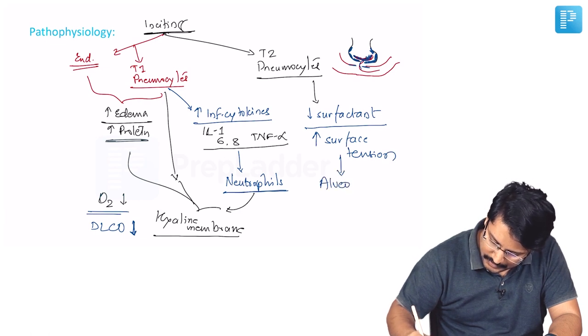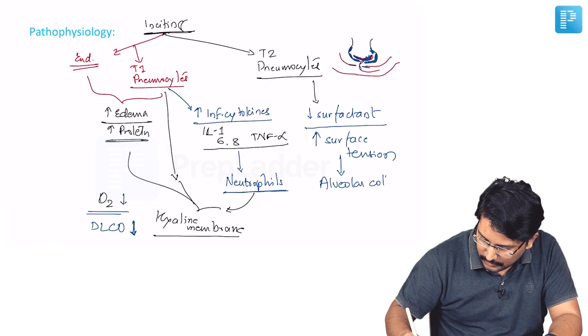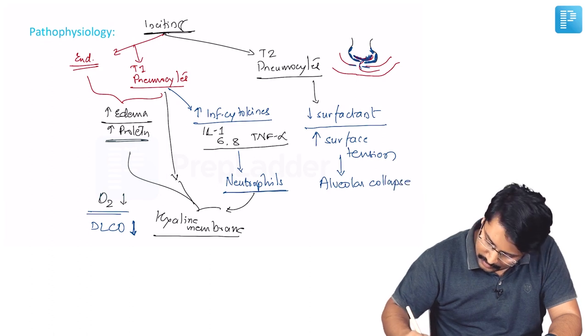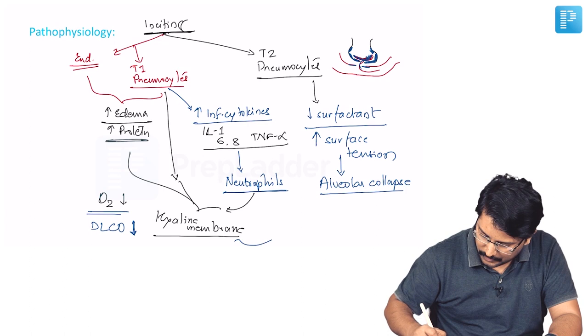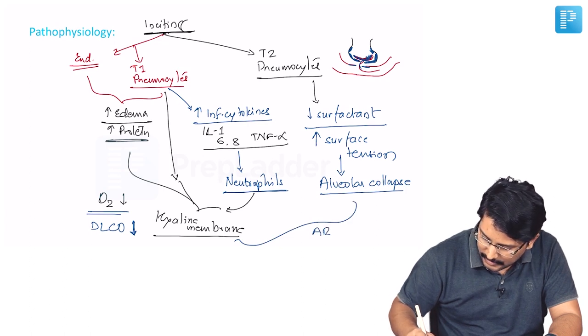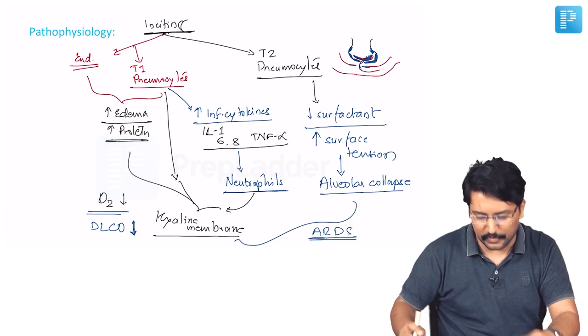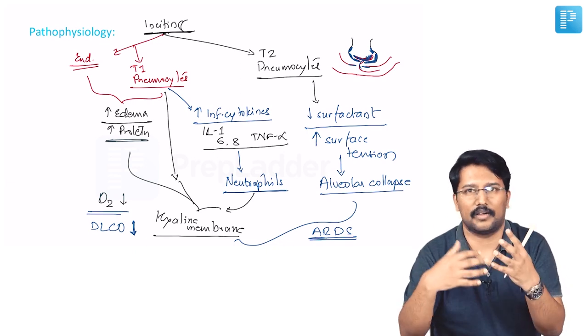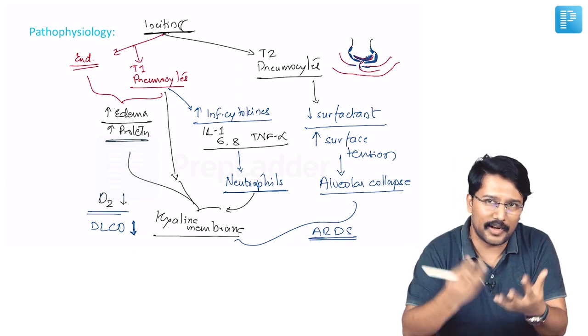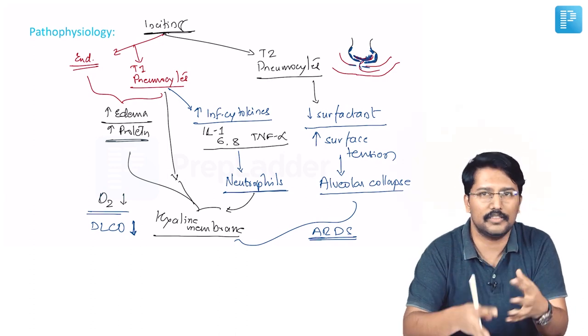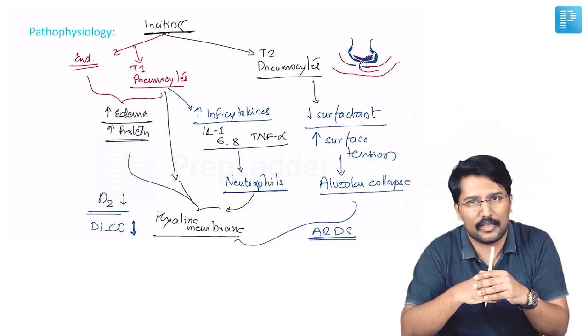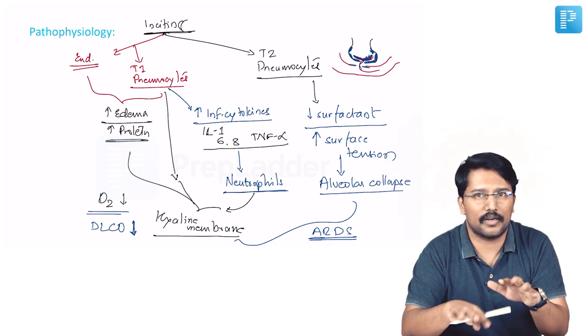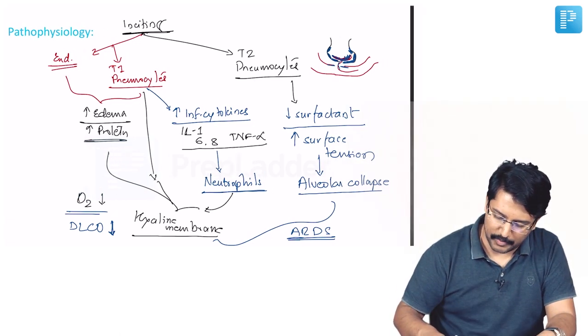This increased surface tension will cause collapse of the alveoli. So alveolar collapse ensues and when the alveoli collapse that further compounds or worsens the gas exchange. So this is the net impact which is finally called as ARDS. There is alveolar collapse plus edema and hyaline membrane formation which is also preventing gas exchange. So net result is what we call as ARDS. This is the important underlying pathophysiological mechanism.